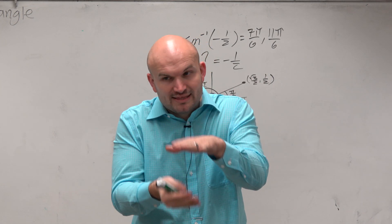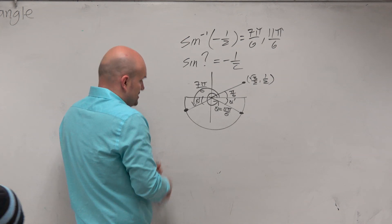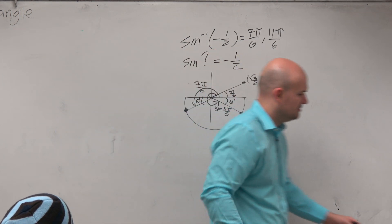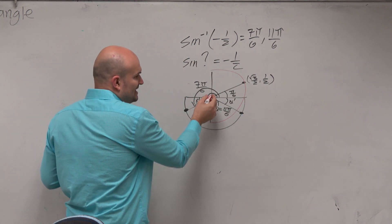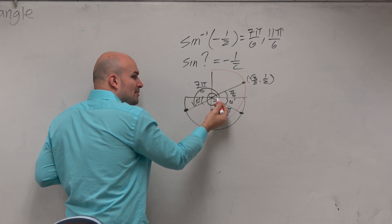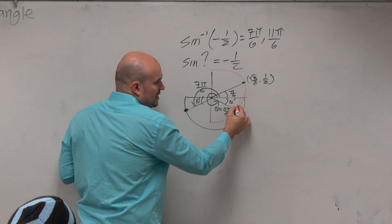So we have to work within our restriction. And our restriction of sine inverse is our angles have to be between negative π/2 and π/2. So we can't use either of these angles because they both go outside of the restriction. We have to remain in the restriction, which we already talked about.